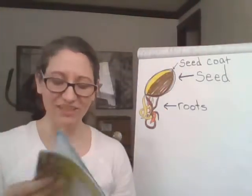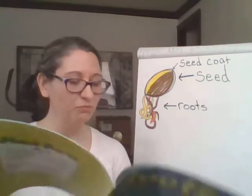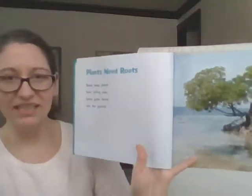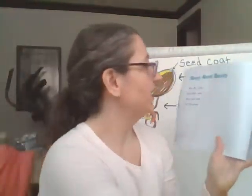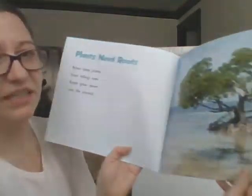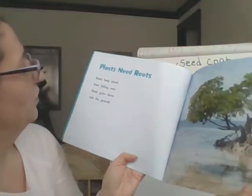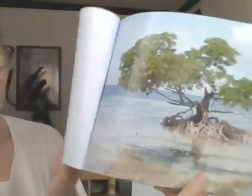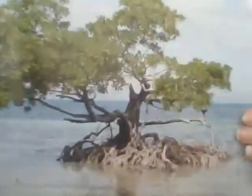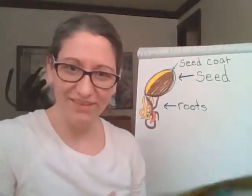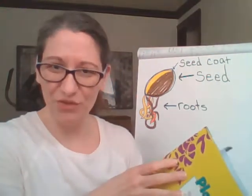Let's start at the beginning. 'Plants need roots. Roots keep plants from falling over. Roots grow down in the ground.' Wow, look at the roots on that — you see those? They're even coming up above the ground. Have you ever noticed that on a tree?